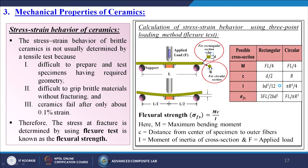The stress-strain behaviour of brittle ceramics is not usually determined by a tensile test because it is difficult to prepare and test specimens with the required geometry, difficult to grip brittle materials without fracturing them, and ceramics fail after only about 0.1% strain. Therefore the stress at fracture is determined using the flexural strength, which is considered equivalent to the tensile strength of that ceramic material.